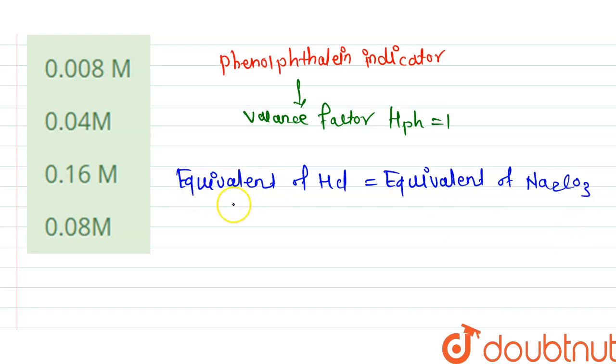So the formula is N1V1, normality and volume, is equal to N2V2. This is the N1V1 of HCl and N2V2 of Na2CO3.